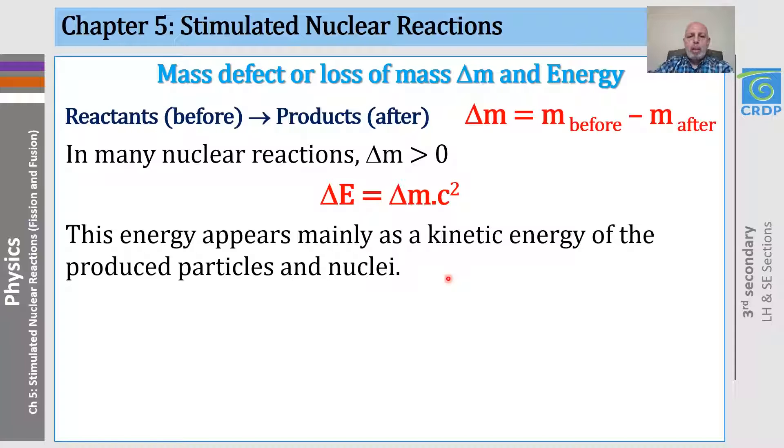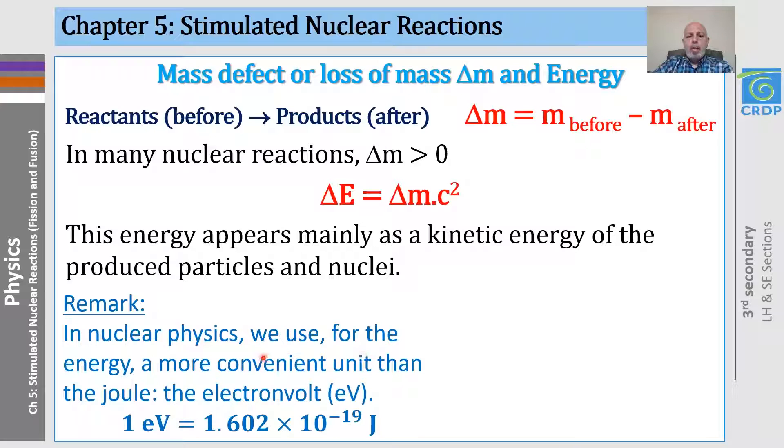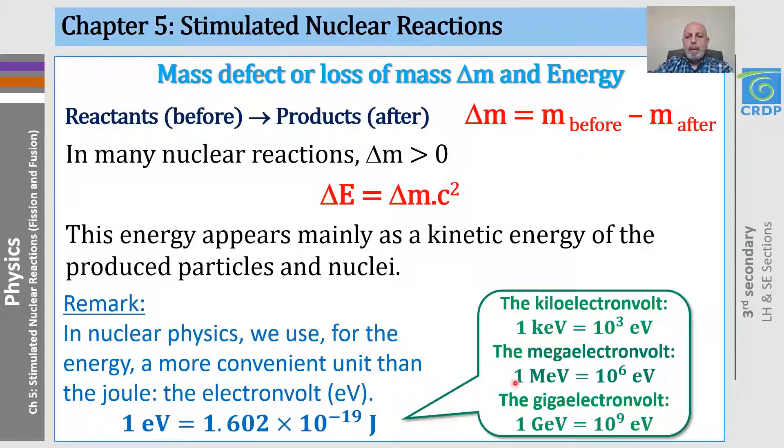This energy appears mainly as kinetic energy of the produced particles and nuclei. A convenient unit that we will use in nuclear physics from now on is the electron volt, with the kilo electron volt, the mega electron volt, and the giga electron volt.